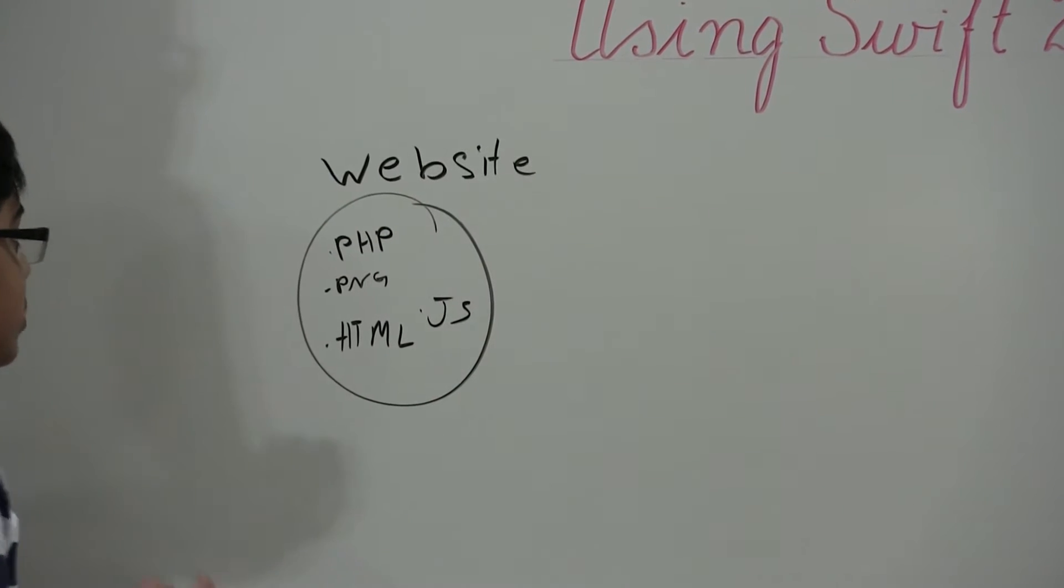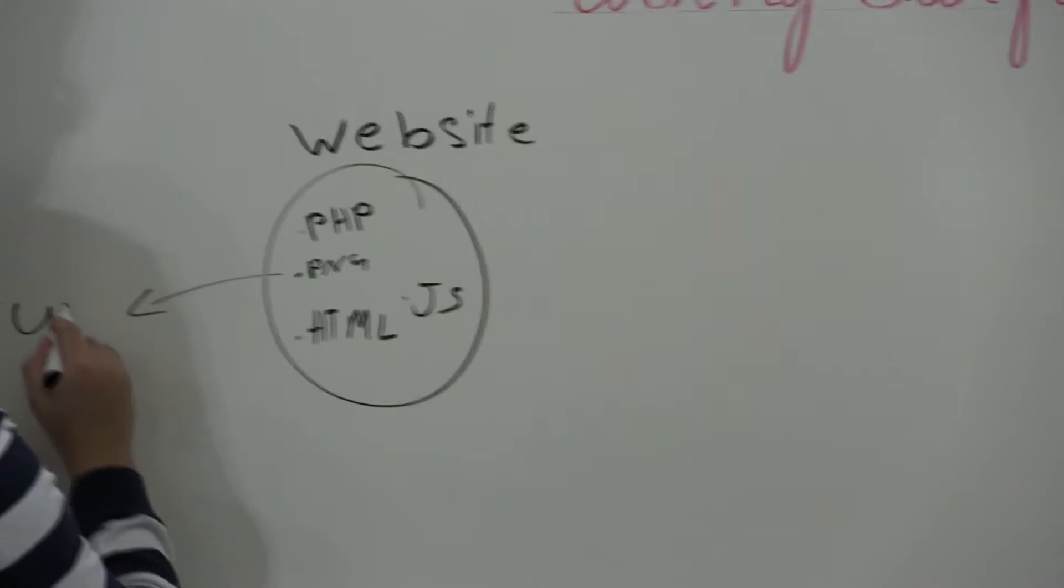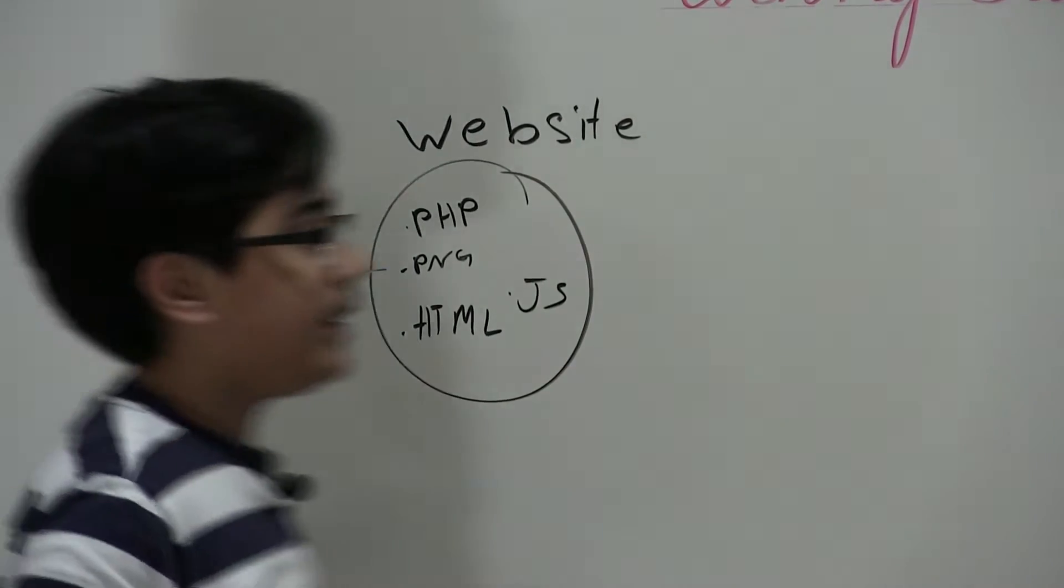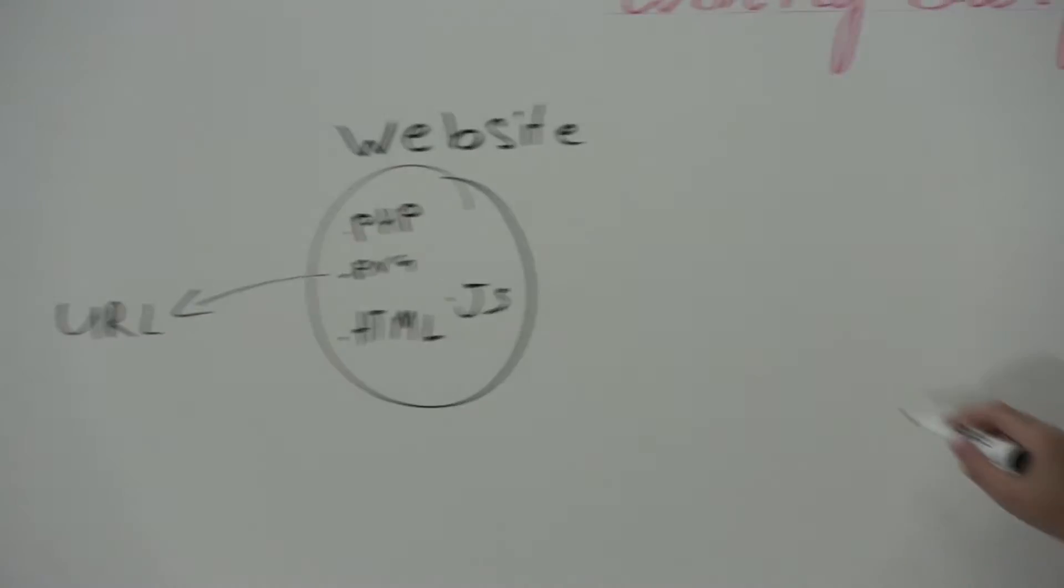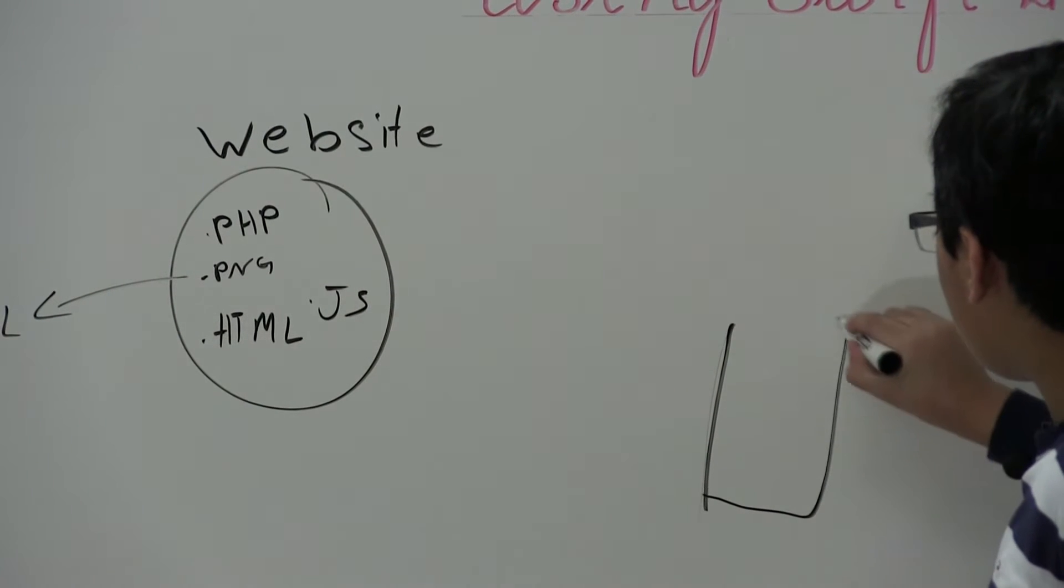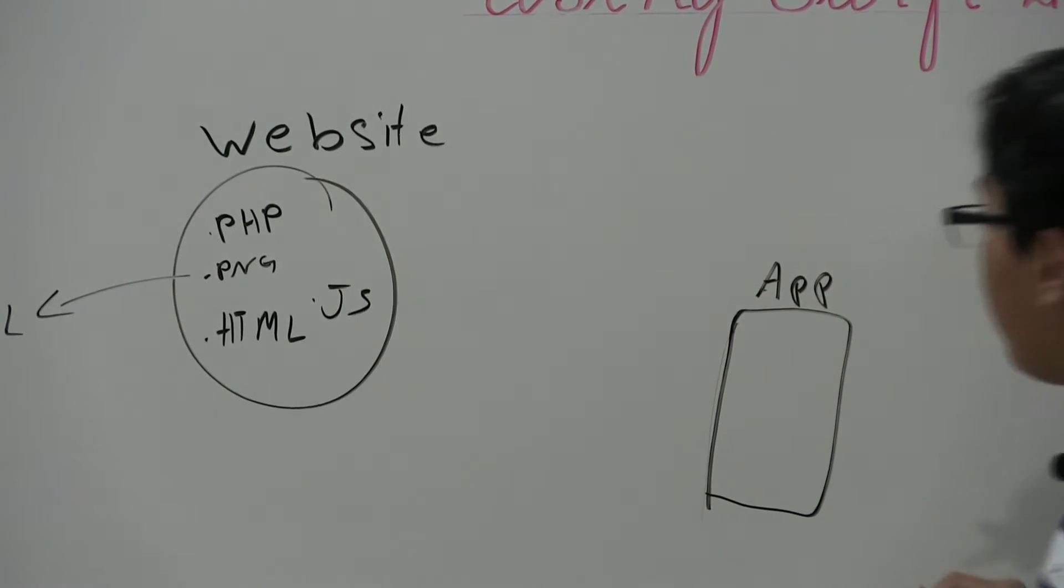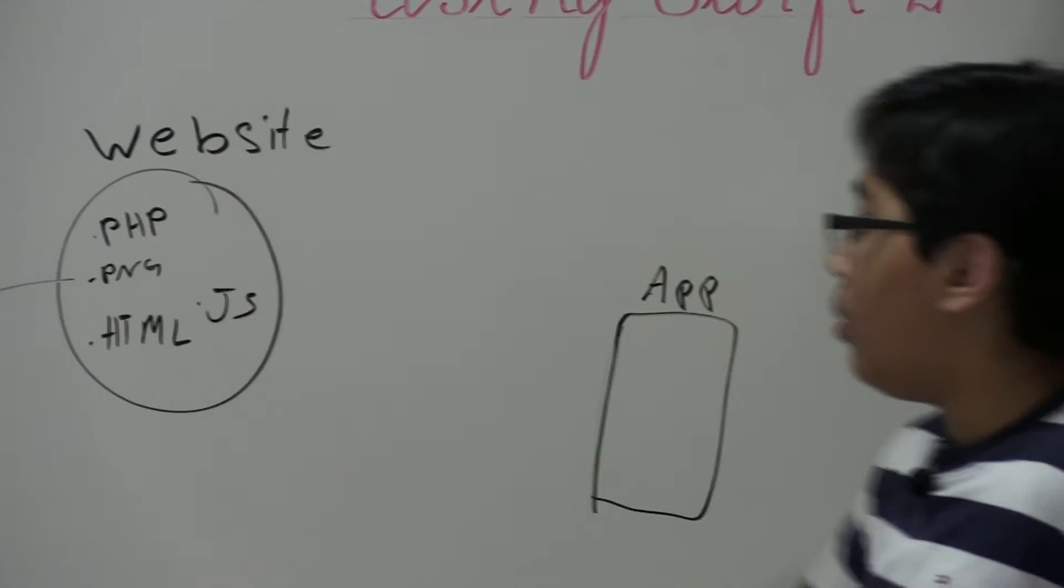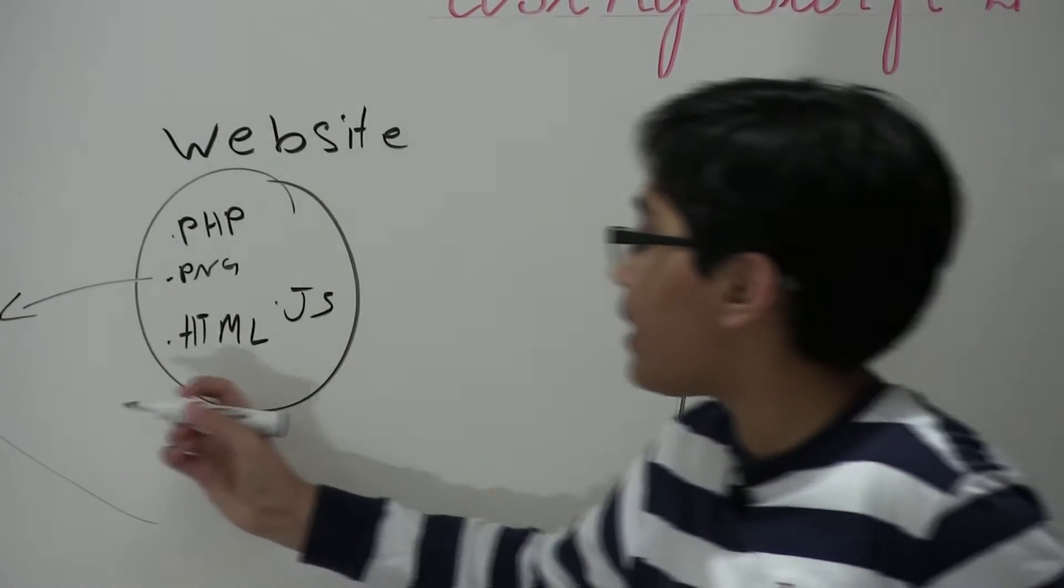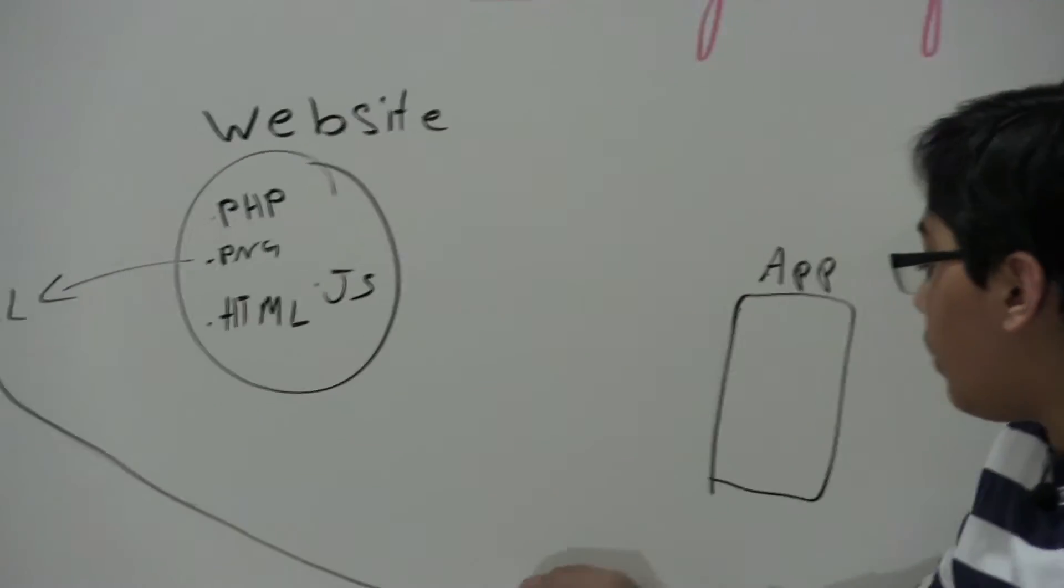What's going to happen is we're going to find a URL for this PNG file. And let's just pretend our app is over here, over here, and this is our app. So now what's going to happen is our app will take the URL, I don't know what's wrong with my marker. So now it's going to take our URL.